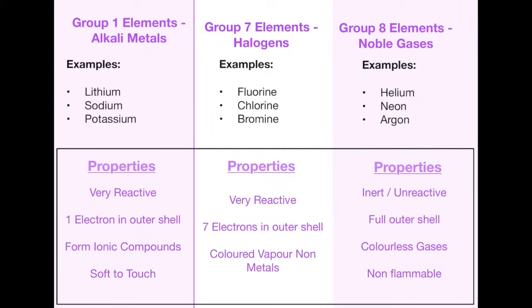And finally we have the different types of elements within the groups that you need to know about. So group 1 elements such as lithium, sodium and potassium have properties such that they are very reactive. They have one electron in the outer shell because they're group 1. They form ionic compounds when they bond together, which means that they just transfer electrons, and they are soft to touch. So if you were to cut them, they're very easy to cut through.